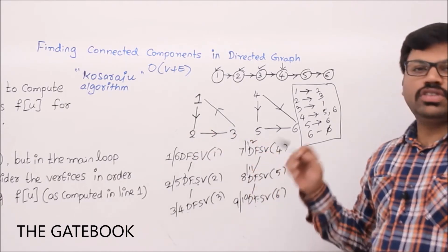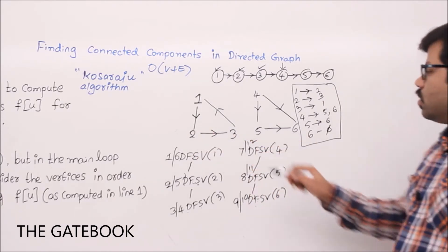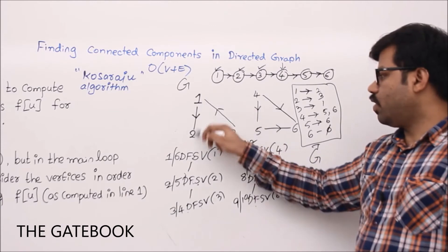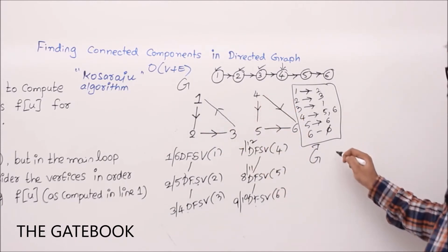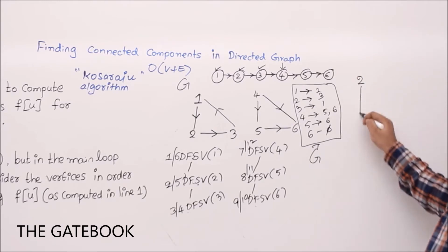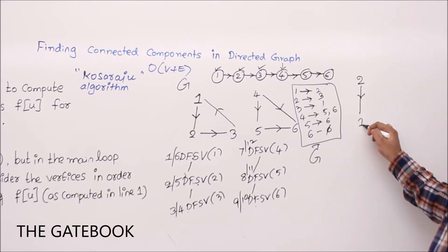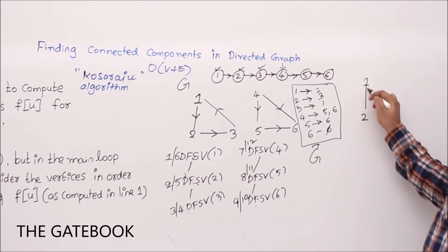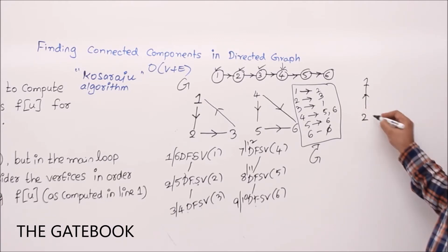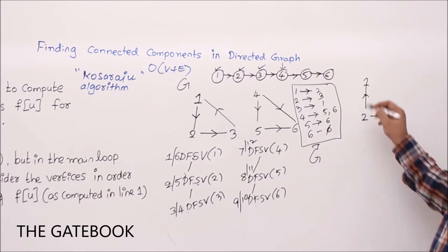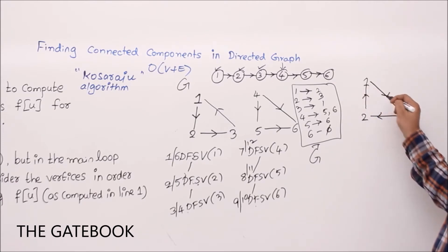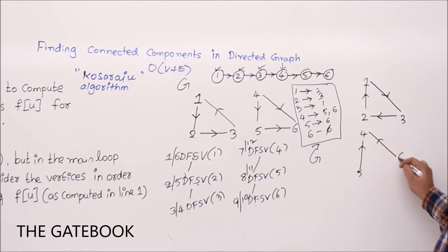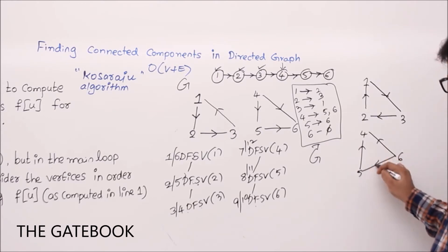Next step: compute G transpose. G transpose reverses all edges. Edge 1→2 becomes 2→1; 2→3 becomes 3→2; 3→1 becomes 1→3. Then 4→5 becomes 5→4; 4→6 becomes 6→4; and 5→6 becomes 6→5. This is G transpose.